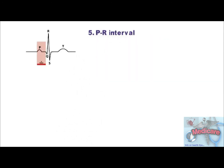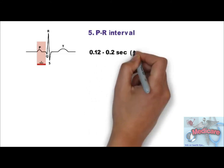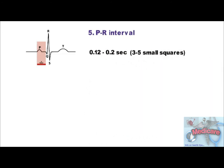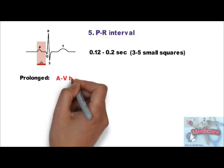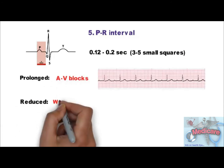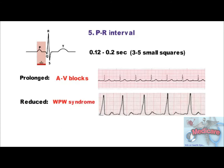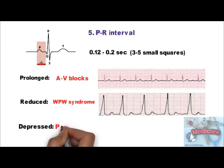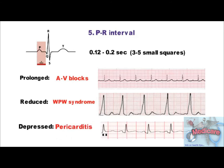Step 5 is PR interval. It is measured from the start of P wave to the start of Q wave — that is why some call it the PQ interval. Normally it is 0.12 to 0.2 seconds, that is 3 to 5 small squares. It is prolonged in AV blocks, reduced in WPW syndrome where an accessory pathway conducts impulses faster than normal producing a shorter PR interval, and PR interval is depressed in pericarditis cases.